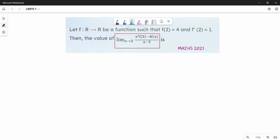Then the value of limit x approaches to 2: x square into f of 2 minus 4 f of x, divided by x minus 2. So if we have a function f with f of 2 value 4 and f prime 2 equals 1.